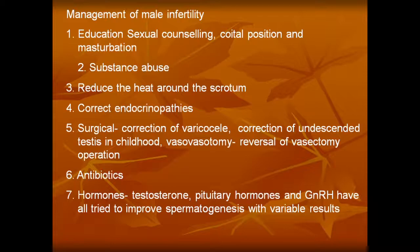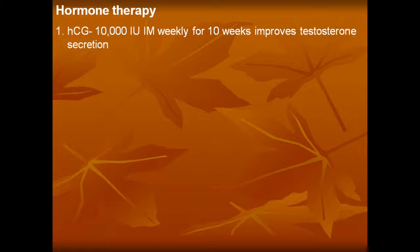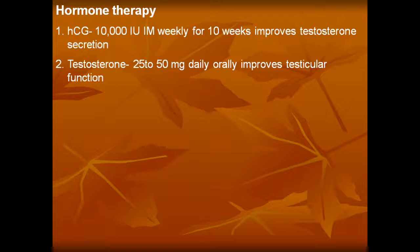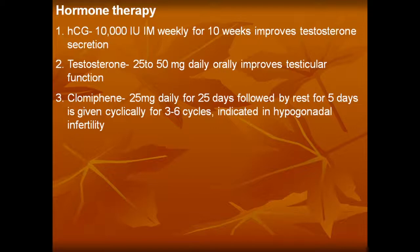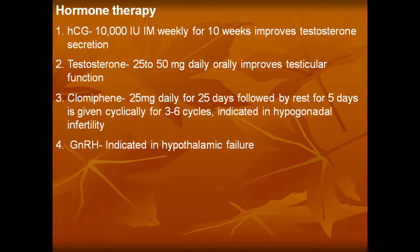Vasovasostomy — reversal of vasectomy operation. Antibiotics if there are any infections. Hormones like testosterone, pituitary hormones, and GnRH have all been tried to improve spermatogenesis with variable results. Hormone therapy: HCG 10,000 international units IM weekly for 10 weeks to improve testosterone secretion. Testosterone 25 to 50 mg daily orally improves testicular function. Clomiphene 25 mg daily for 25 days followed by rest for 5 days, given cyclically for 3 to 6 cycles, indicated in hypogonadal infertility. GnRH indicated in hypothalamic failure.